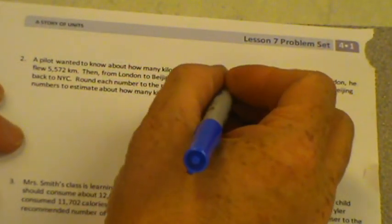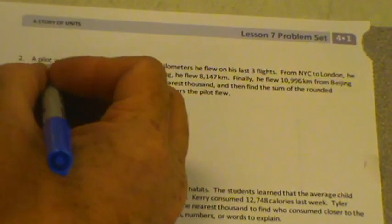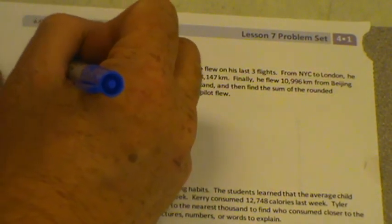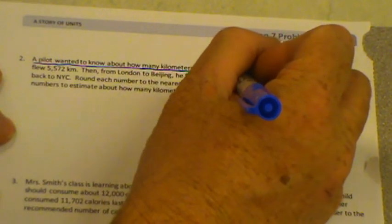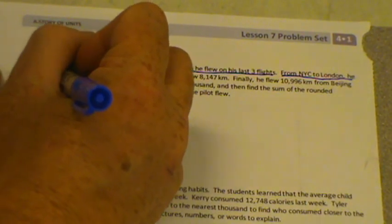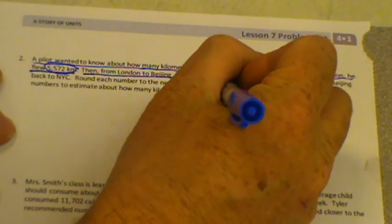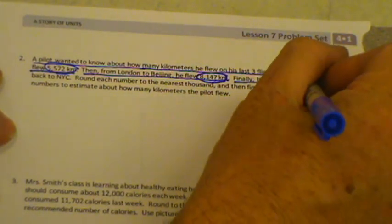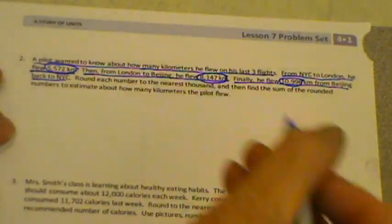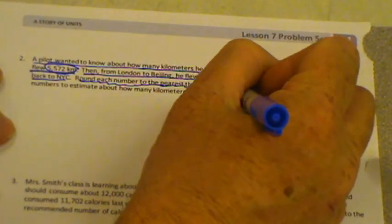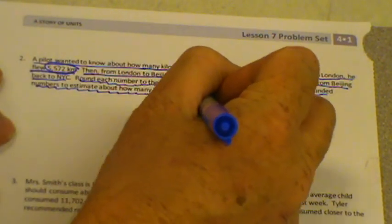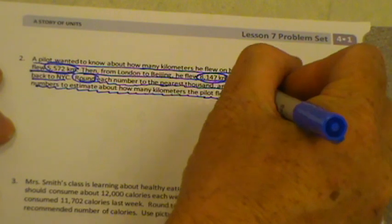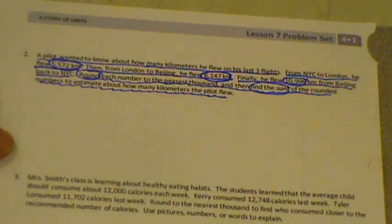So a pilot wanted to learn about how many kilometers he flew in his last three flights from New York City to London. He flew 5,572 kilometers. So we're going to underline this. A pilot wanted to know about how many kilometers he flew on his last three flights. From New York City to London, he flew 5,572 kilometers. That's what we know. And I'm going to circle that. Then from London to Beijing, he flew 8,147 kilometers. So I'm going to circle that. Finally, he flew 10,996 kilometers from Beijing back to New York City.